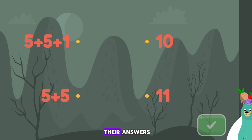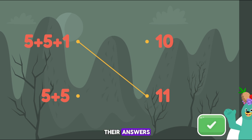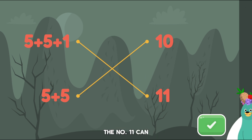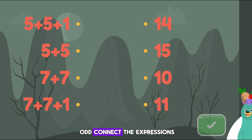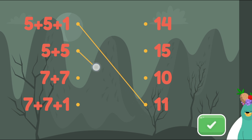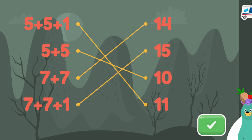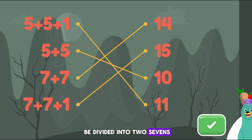Connect the expressions to their answers. Great! You matched them! The number 11 can be divided into two 5s with one left over. That means 11 is odd. Connect the expressions to their answers. Perfect! You matched them! The number 15 can be divided into two 7s with one left over. That means 15 is odd.